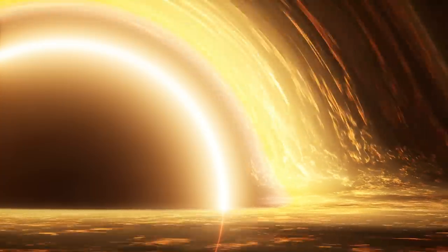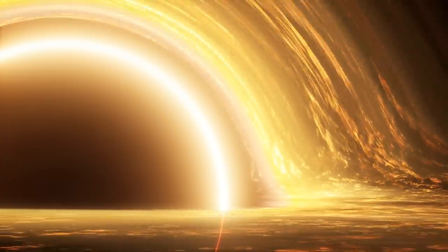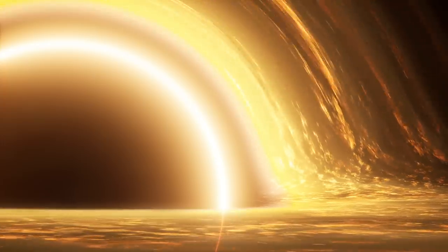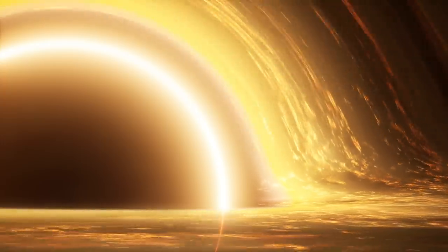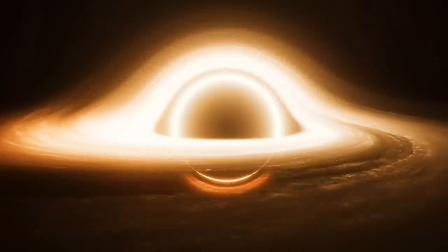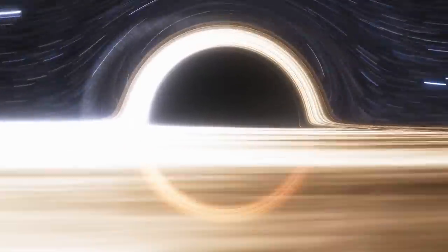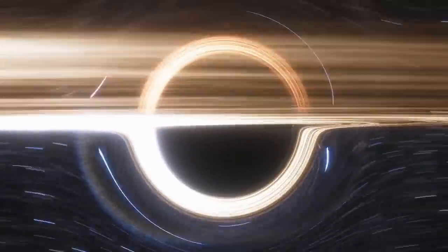Stephen Hawking's area theorem, which seems to have been proved by these collisions now, says that if you collide two black holes together, then the area of the horizon around the new black hole has got to be bigger than the area of the horizons of the two little black holes. And that seems to be what we've seen.